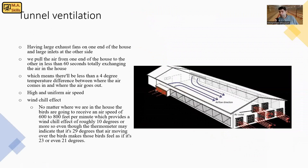To explain more about tunnel ventilation - tunnel ventilation is simply having large exhaust fans on one end of the house and large inlets at the other side. We need to pull the air from one end to the other in less than one minute, exchanging the total air in the house, which means there should be less than 4 degree temperature difference between where the air comes in and where it goes out. This is really important. By tunnel ventilation, we create a uniform environment in terms of air temperature, especially during warm weather.